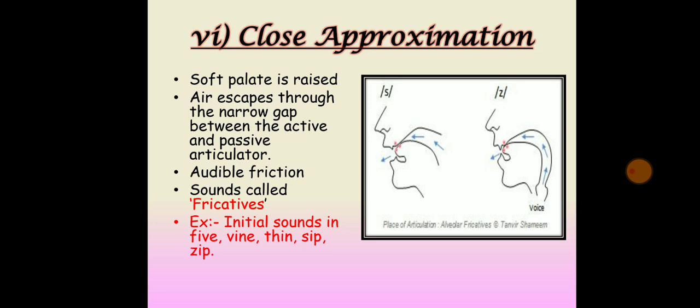Close approximation: the active articulator is brought close to the passive articulator, leaving a very narrow gap between them. The soft palate is raised, so the nasal passage of air is completely closed. The lung air then escapes through the narrow gap between the active and passive articulators, producing audible friction. Sounds produced with this stricture are called fricatives. For example, the initial sounds in the English words five, sip, zip, and ship are fricatives.